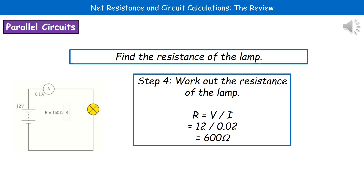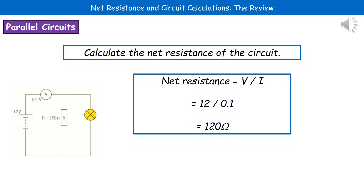Always include units if they're not given in the answer line, as that could be worth a mark. The only other thing you could be asked with this same circuit is to calculate the net resistance. Remember, net resistance is as if all components are replaced by a single resistor, so we simply use V ÷ I: 12 divided by 0.1 gives a net resistance of 120 ohms — noticeably different from the individual component resistances because of the way they're arranged.